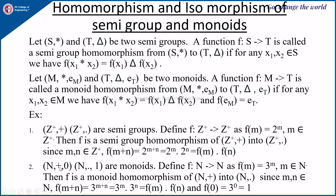Second example: (N, +, 0) and (N, ·, 1) are monoids. If you define f from N to N as f(M) = 3^M where M belongs to N, then f is a monoid homomorphism from (N, +) into (N, ·), since f(M + N) = 3^(M+N) = 3^M · 3^N = f(M) · f(N), and f(0) = 3^0 = 1 — the identity of the first set maps to the identity of the second.